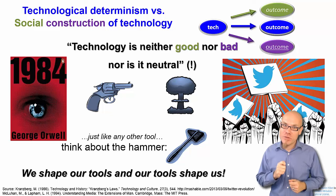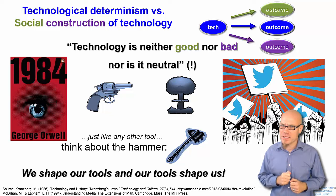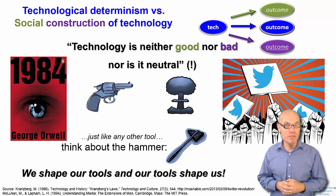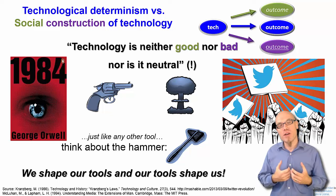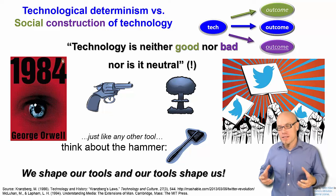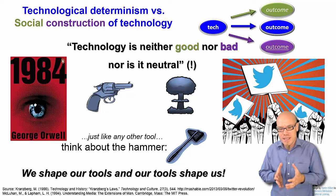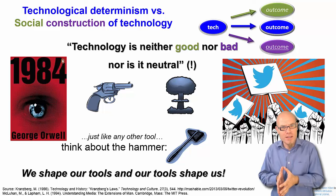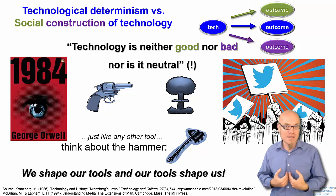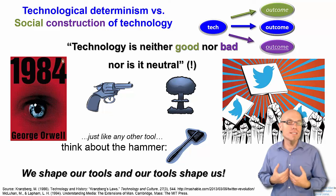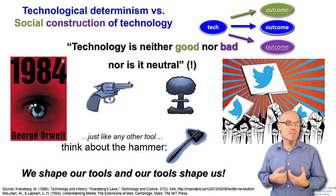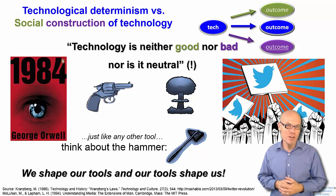By recognizing deterministic statements for what they are, we also understand that we have a social responsibility to shape the digital revolution. It is a process of social construction. Digitalization by itself doesn't have a predetermined outcome — it is on us. The responsibility is with our generation to ensure that digitalization is used for the benefit of society.